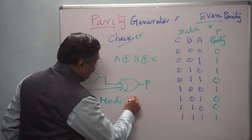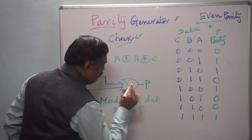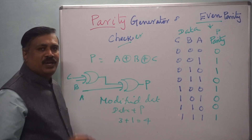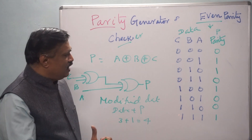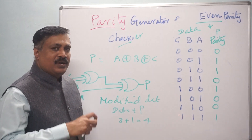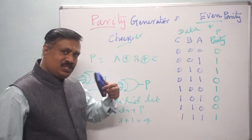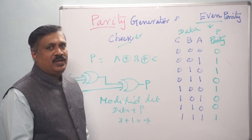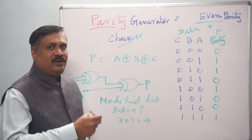We are sending the modified data — that means data plus parity bit. The data bit is 3 and the parity bit is 1, so we are sending 4 bits to the receiver. The receiver will receive 4 bits and will check parity again — whether it is even or odd. Since we are sending even parity, if it is still even parity there is no error; if it is odd parity, then there is an error.